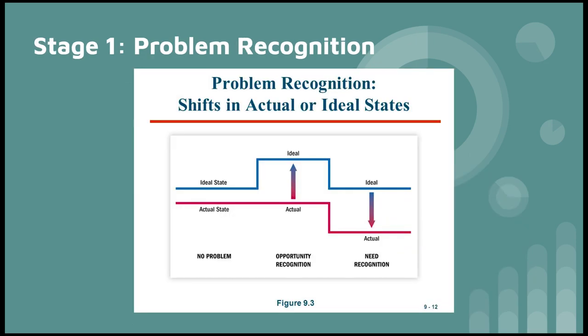For stage one, problem recognition, we decided to put a chart from the textbook in. When ideal state goes up and actual state stays the same, you have opportunity recognition. Versus when actual state goes down, you have need recognition. These help determine the need or the opportunity for buying the pasta sauce in the first place.